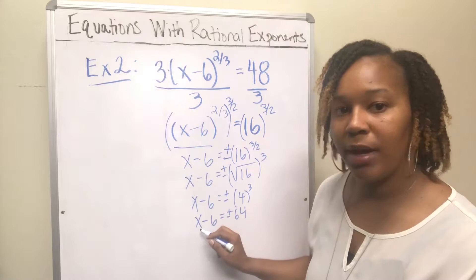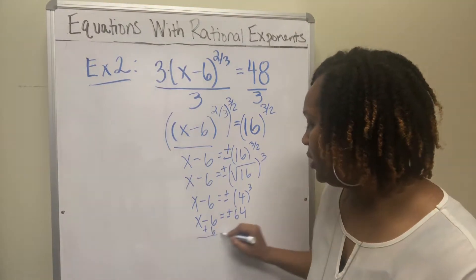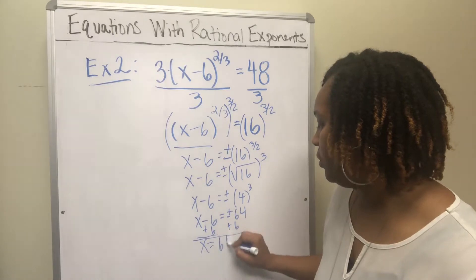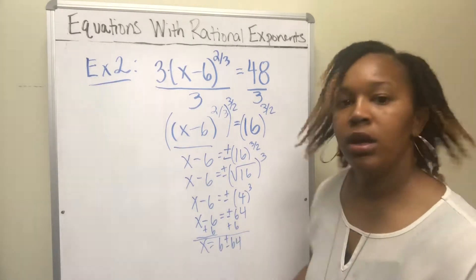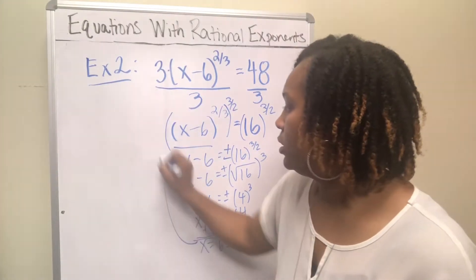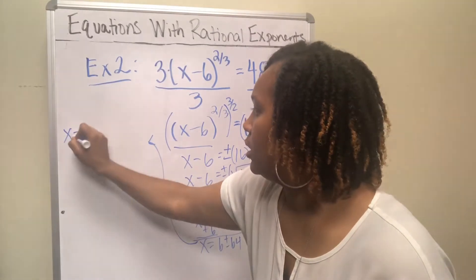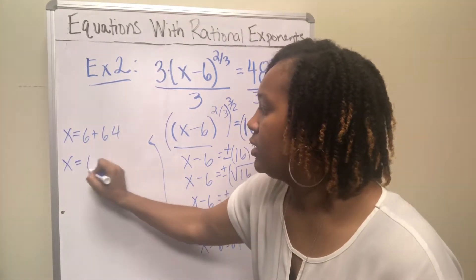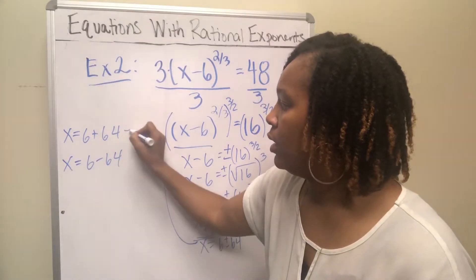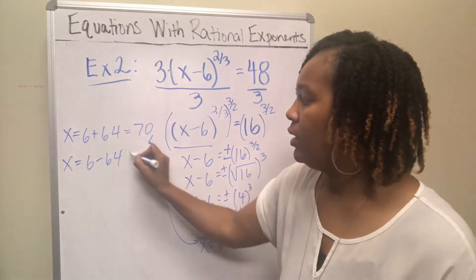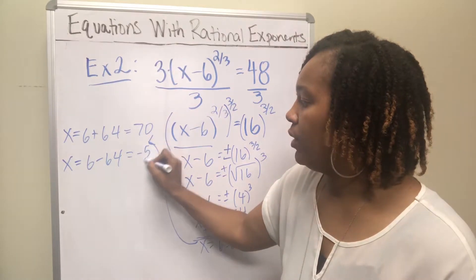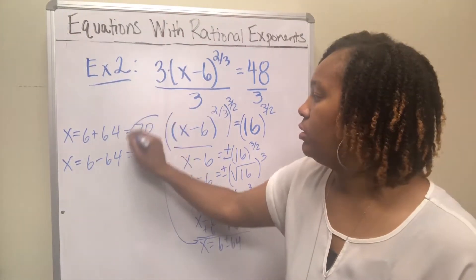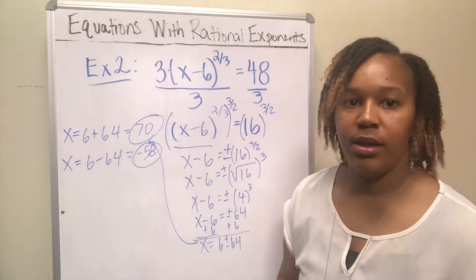Get rid of the minus 6 by adding 6 to both sides, and you get x equals 6 plus or minus 64. That gives two separate solutions: x equals 6 plus 64, and x equals 6 minus 64. 6 plus 64 is 70; 6 minus 64 is negative 58. So your two solutions are 70 and negative 58.